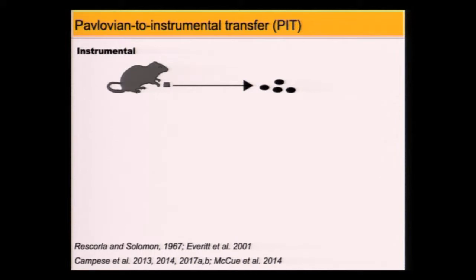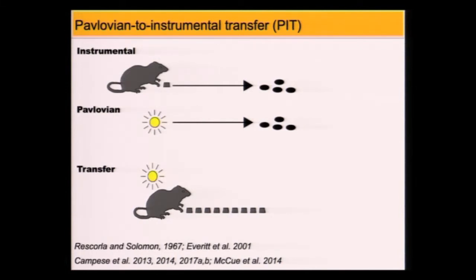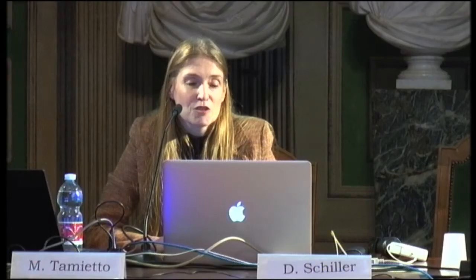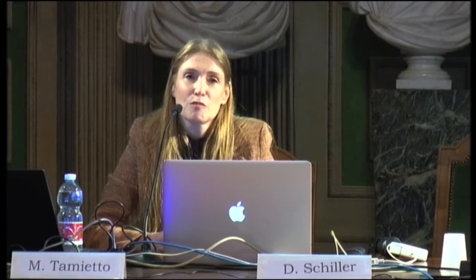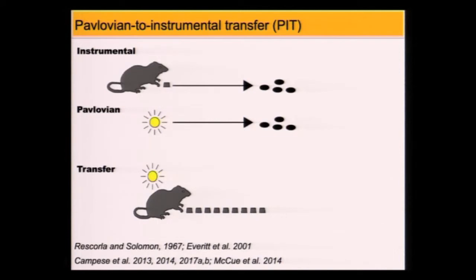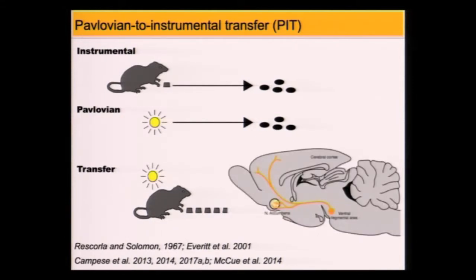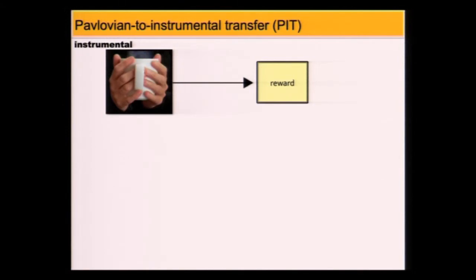So to start addressing that, we focused on an interesting protocol that shows that conditioned stimuli, stimuli that has value in the environment, can affect the actions we perform because they can enhance our motivational state. The protocol that captures that is called Pavlovian to Instrumental Transfer, or PIT. In this protocol, an animal presses a lever and gets a food. But also in a separate session, the animal is exposed to a cue, for example, light, which is also associated with reward. But then the critical phase is the transfer phase, where the animal is pressing the lever to get the food. This time, food is not present. And then at the same time, the stimulus comes on. There's a light. And what happens is that the animal presses more vigorously, faster and stronger. So you can see this enhancement in the motivational state.